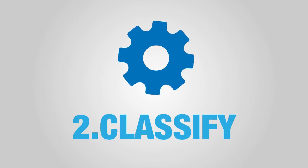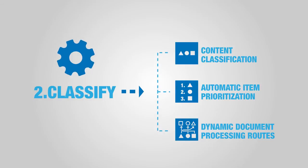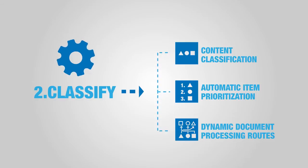Step 2: Classify. eFlow DMR combines different learning and classification techniques to route incoming documents of all types in accordance with the enterprise's business priorities and compliance regulations.